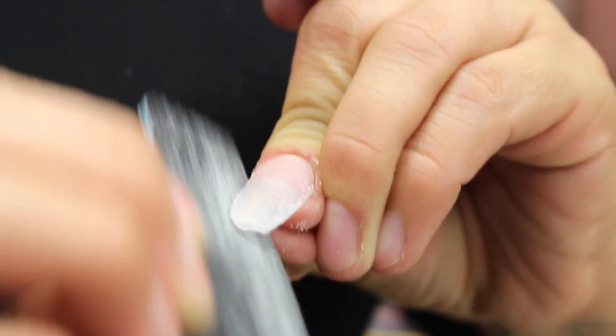I then like to take my file and just start filing the top of the nail. Even though I'm going to be using my e-file, I still like to go in with the handheld file and just kind of get all the lumps out of the way, anything that I can do without using the e-file.